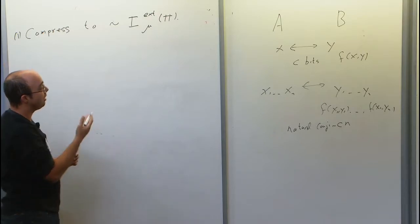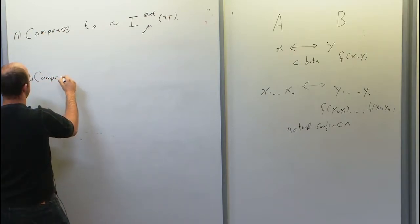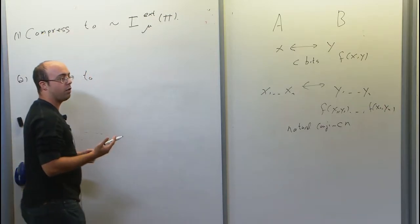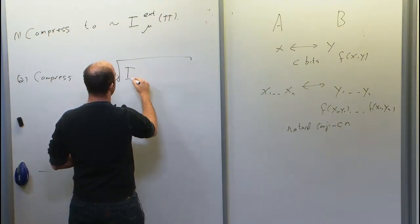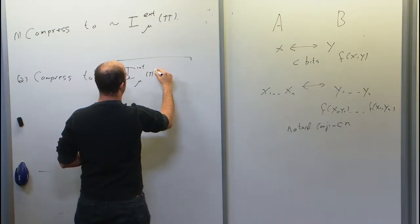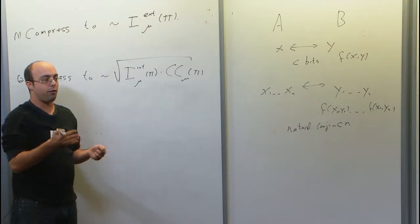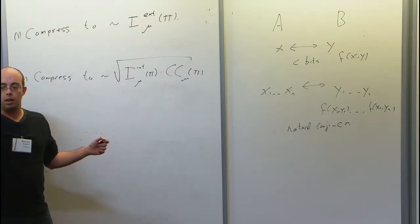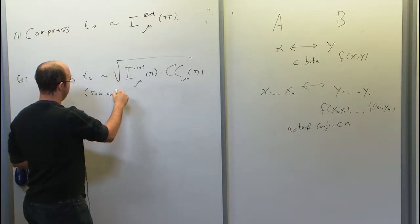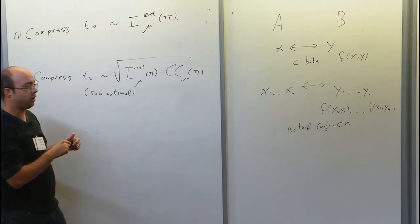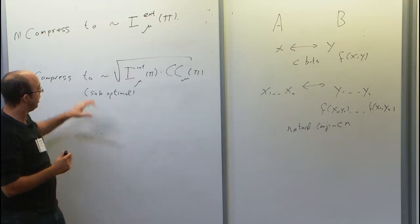Another notion of compression concerns the internal information. Here we know partial results: we can compress to something like the geometric mean of the information and the communication — roughly √(IC · CC). So if the protocol is somewhat efficient in communication and very efficient in information, we can somewhat compress it.